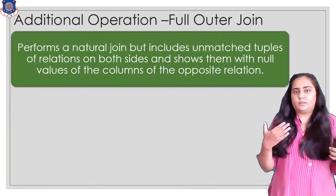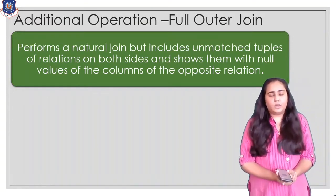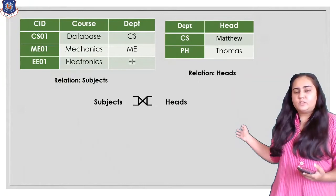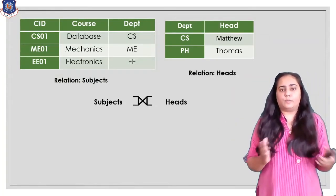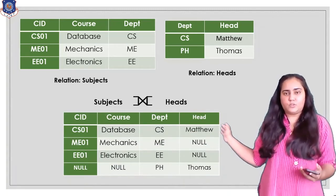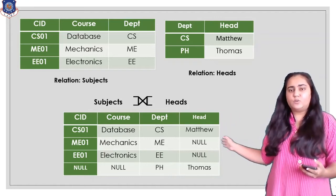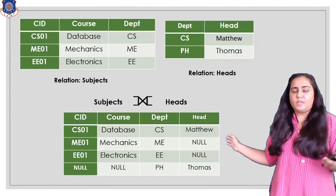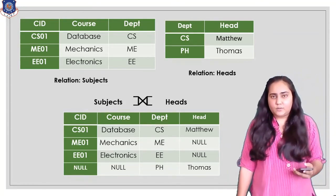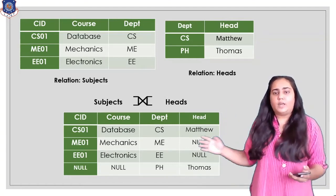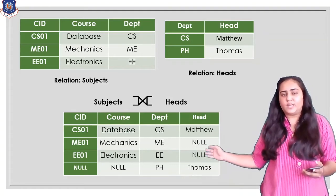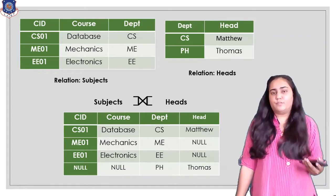The full outer join keeps unmatched tuples from both sides with null values. You use the bowtie symbol with extension lines on both sides. The first row comes from the natural join match; the next two rows (ME and EE) come from the left outer join since they don't match any department in heads; and the last row (PH/Thomas) comes from the right outer join where PH has no match on the left side and c_id and course are null.